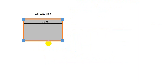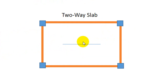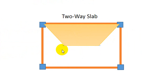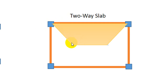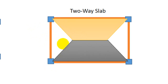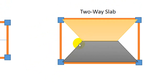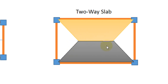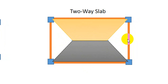Now for a two-way slab, the load transfers to all four beams. To determine how much load goes to each beam, we draw lines at 45-degree angles from each corner toward the beams. Drawing these lines from each corner and connecting them, we get two trapezoidal load regions on the longer sides and two triangular regions on the shorter sides.